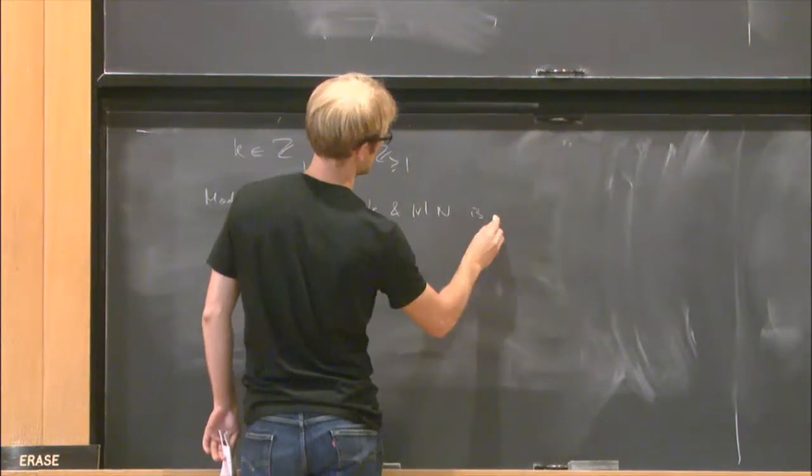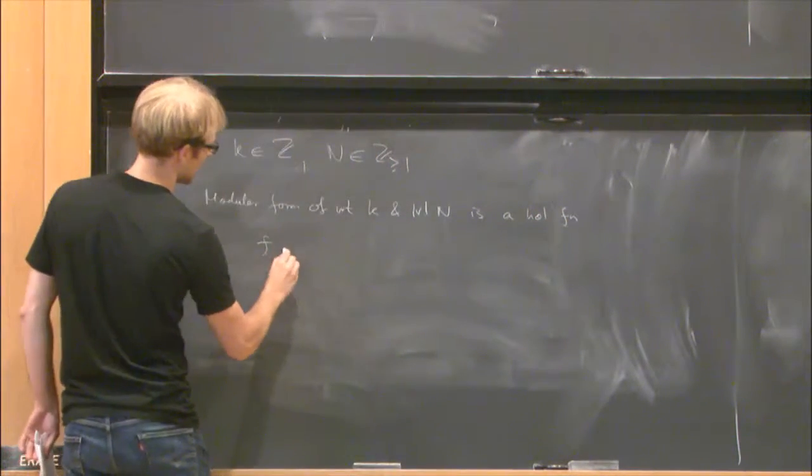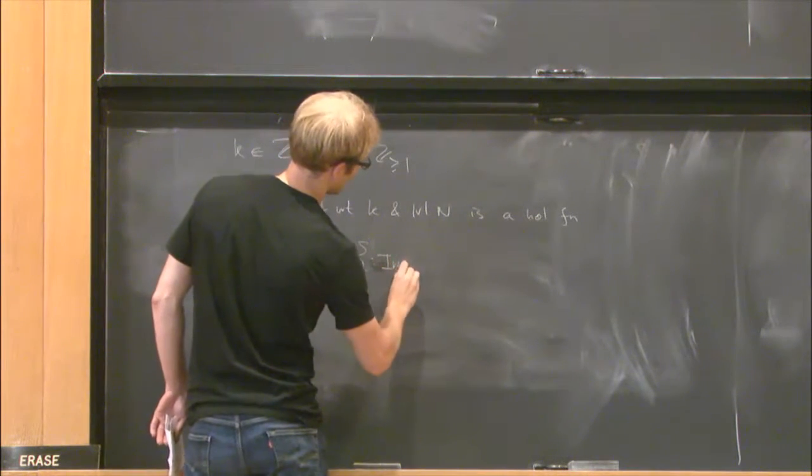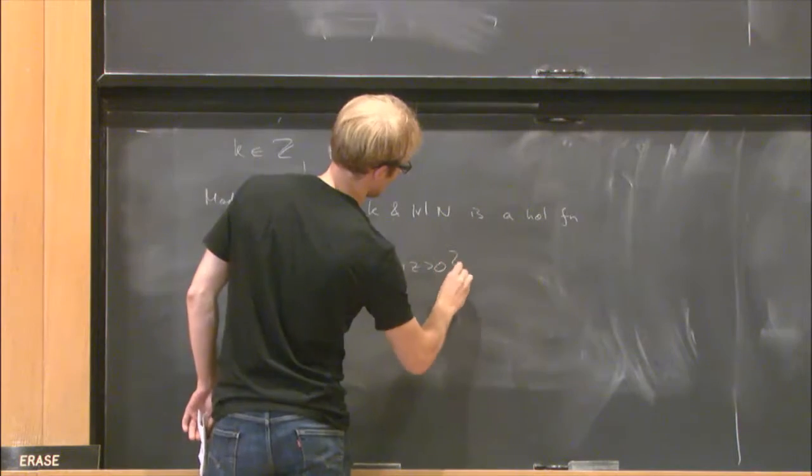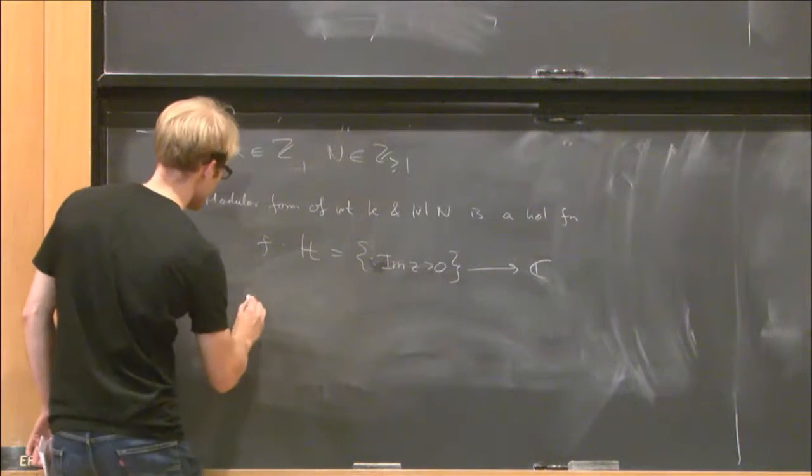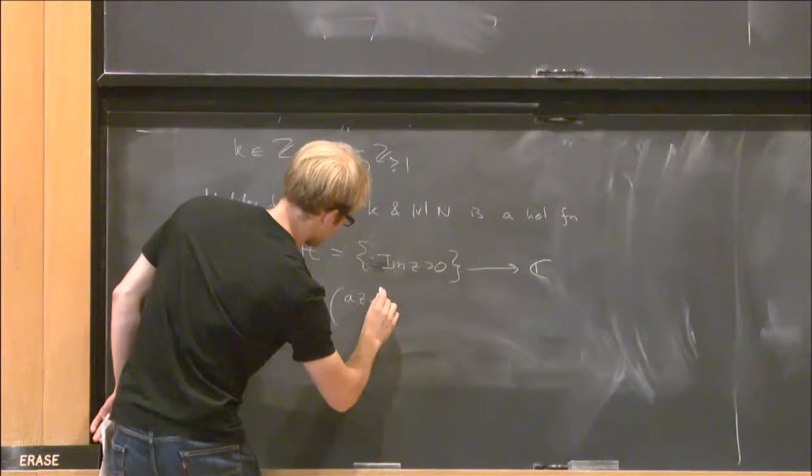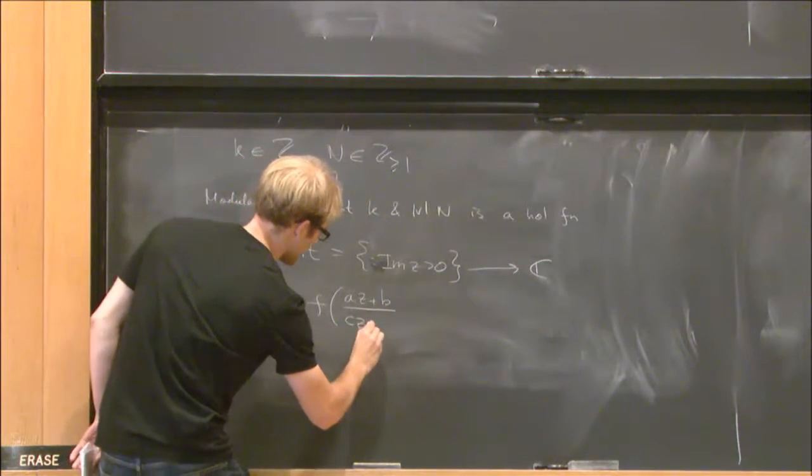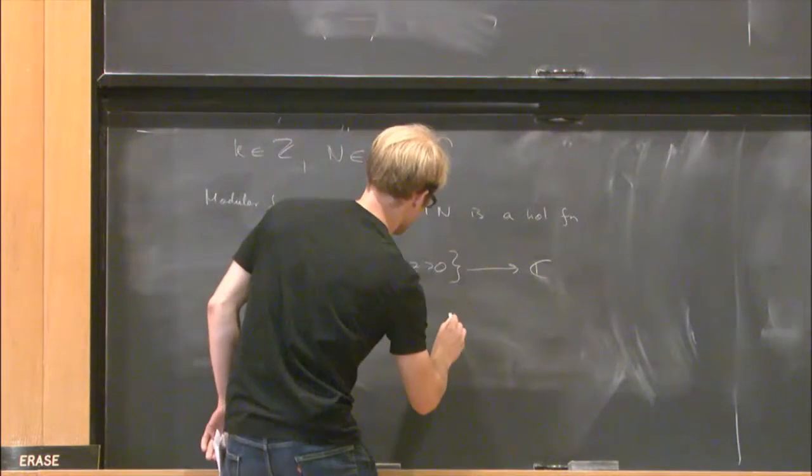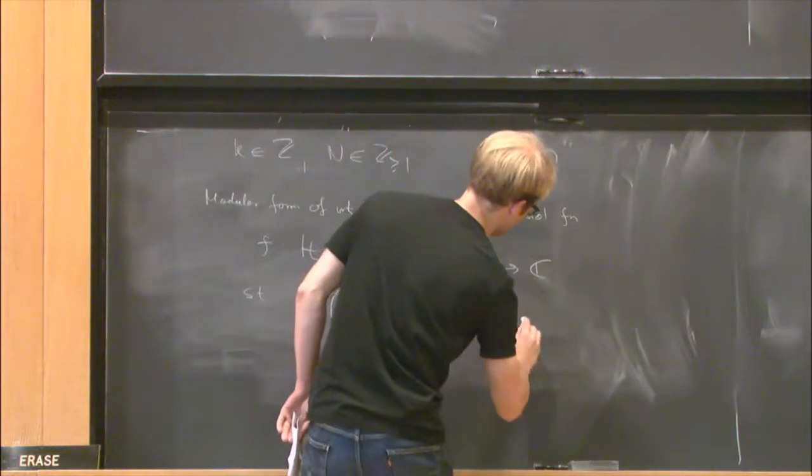for simplicity, is a holomorphic function from the complex upper half plane, satisfying the following functional equation. So f of (az + b)/(cz + d) is equal to (cz + d) to the k times f of z,